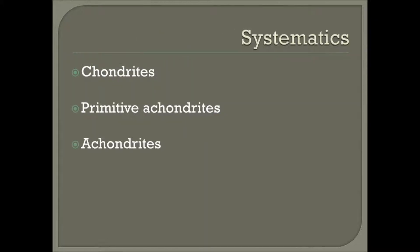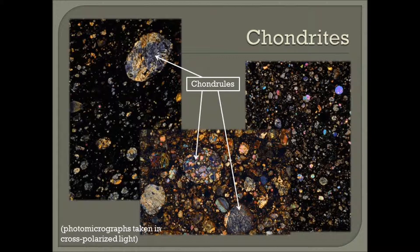Meteorites are broadly divided into three categories: chondrites, primitive achondrites, and achondrites. Most chondrites contain small spheres called chondrules and have aggregational textures that distinguish them from the igneous or recrystallized textures of achondrites.